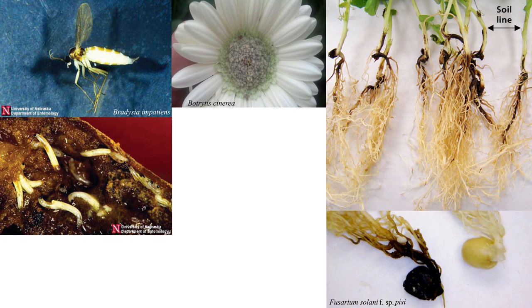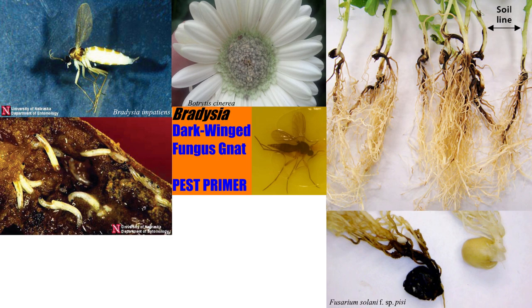Botrytis cinerea is difficult to control, in part because many hosts can carry the pathogen, increasing the chances of infection to crops, especially since it can survive for extended periods of time as infectious inoculum in crop debris. It also has many modes of attacking the host's physiology, which makes resistance breeding and certain biologically focused strategies less effective.